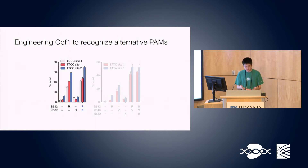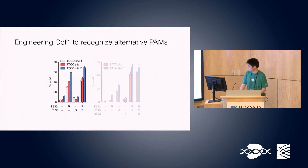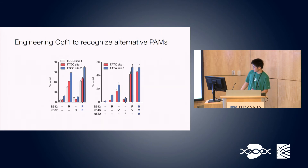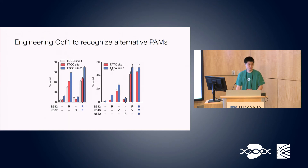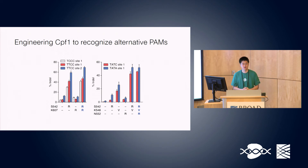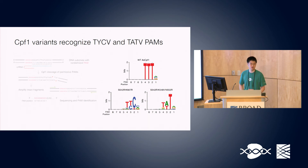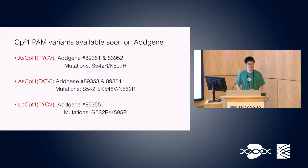We've been engineering Cpf1 to recognize alternative PAM sequences to improve its targeting range. By introducing two arginine mutations in the PAM-interacting domain of Cpf1, we can boost activity significantly at target sites with cytosine-containing PAMs. Similarly, introducing alternative mutations can boost editing efficiency at PAMs where the second position is changed from a T to an A. Overall, these variants improve targeting efficiency about threefold in human coding sequences. An in vitro cleavage assay profiling PAM activity is fairly consistent with what we observed measuring indel rates.